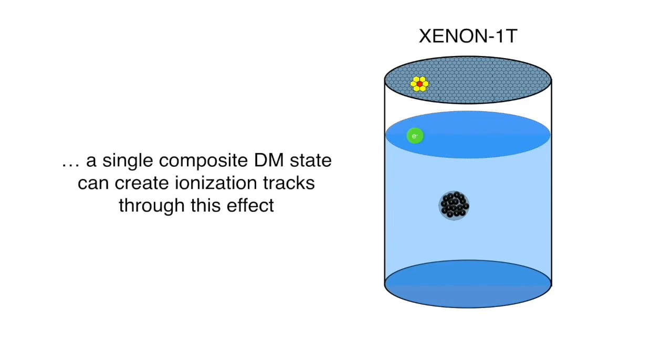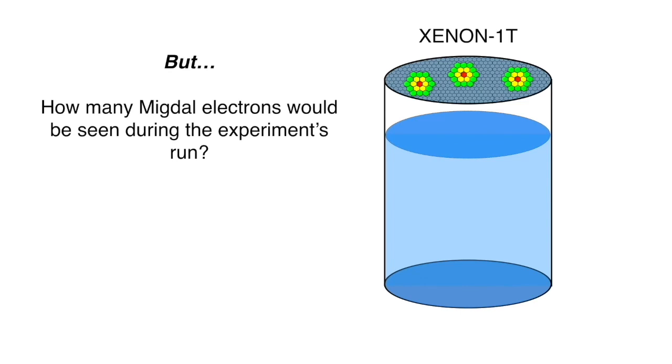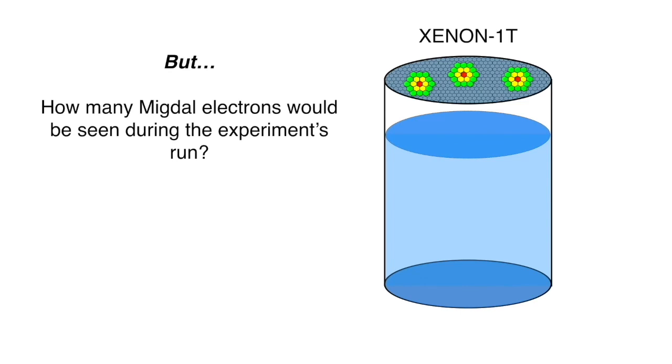But what would this signal look like? And what constraints can be drawn from this? Furthermore, what are the implications for other composite dark matter models?